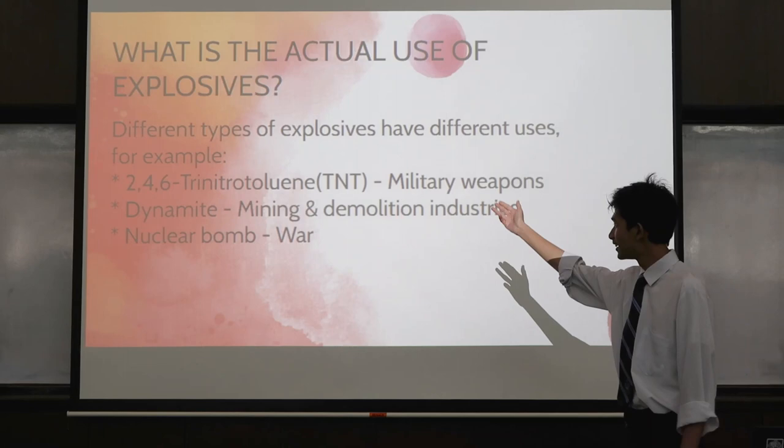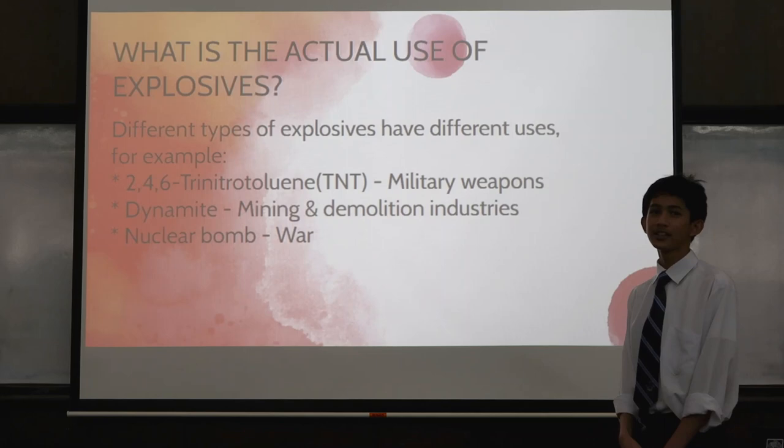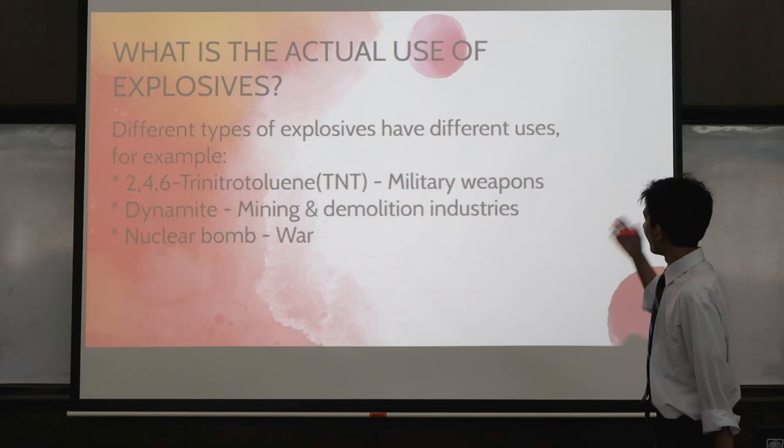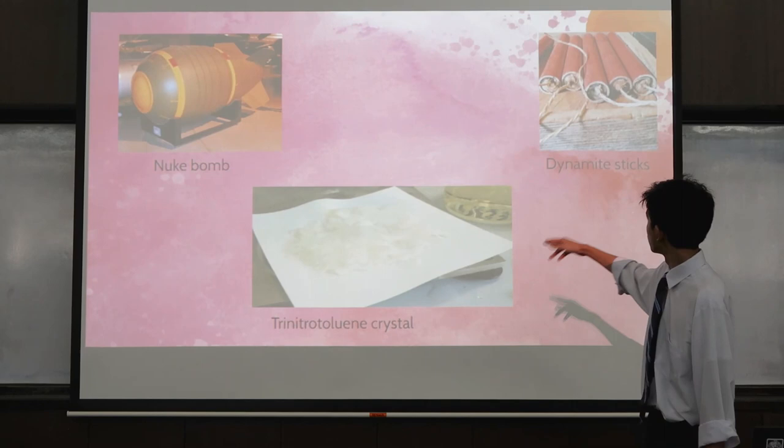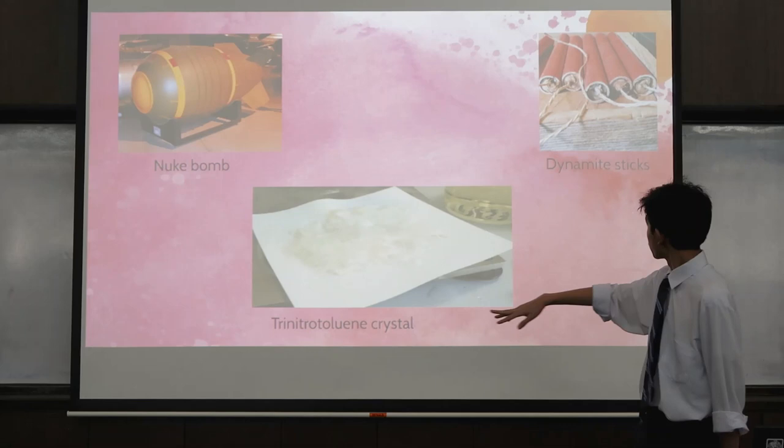The first one is 2-4-6-trinitrotoluene, which you might encounter in chemistry under the topic of nitrogen compounds. That is used for military weapons. Dynamite is used for mining and demolition industries. Nuclear bombs score number one. As you can see, these are pictures of these two: a nuclear bomb, dry nitrotoluene crystals, and dynamite sticks.